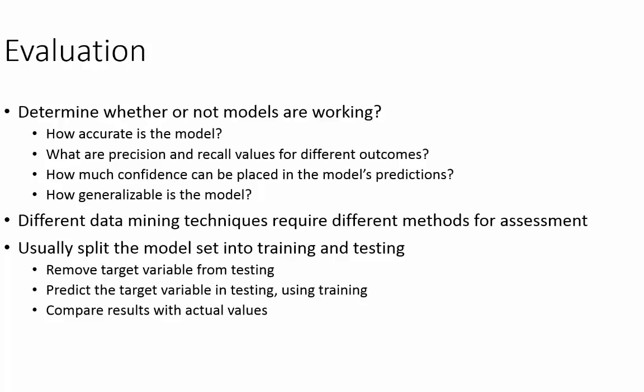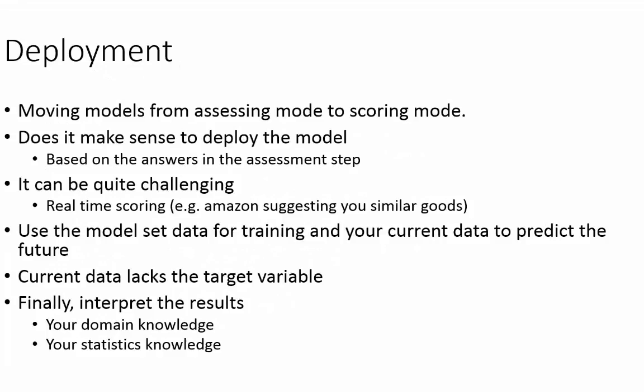When evaluating a model, you typically split the model set into training and testing, removing the target variable from the testing set. You use the training set to build your model and test it on the testing set, then compare results with actual values. After everything checks out and you are happy with the model's performance, you move it from assessing mode to scoring mode — using past data as training and current data as scoring.